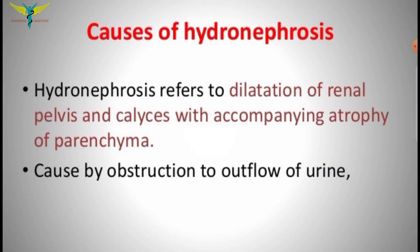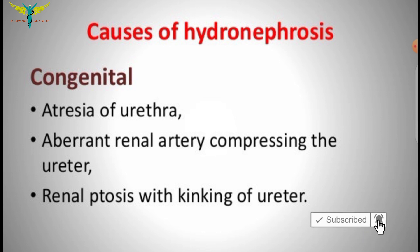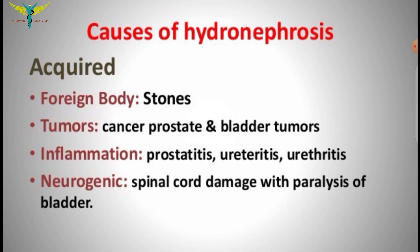This is caused by obstruction of the outflow of urine. There are two causes: congenital and acquired. Congenital hydronephrosis is caused by atresia of the urethra, aberrant renal artery which compresses the ureter, and renal ptosis with kinking of the ureter.